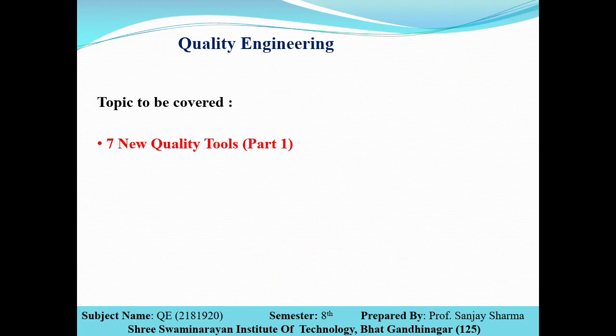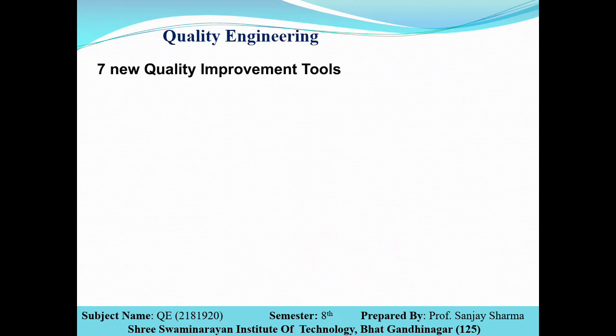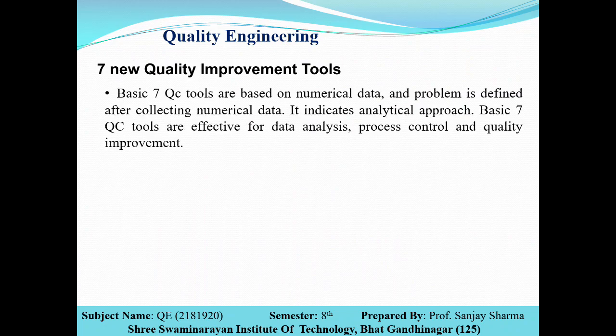Previously we have seen the seven quality control tools. Now, here we will see the seven new quality tools which are used to improve the quality of a product. The seven new quality improvement tools — basically the seven quality control tools, or quality check tools, are based on numerical data, which we have seen in our previous video, and the problem is defined after collecting numerical data. It indicates an analytical approach.